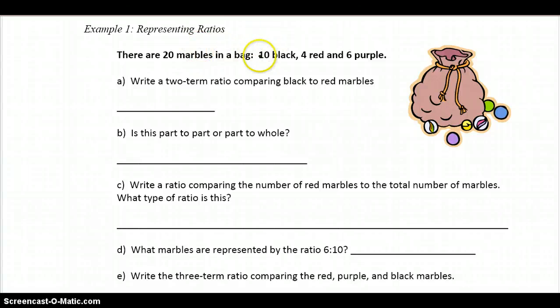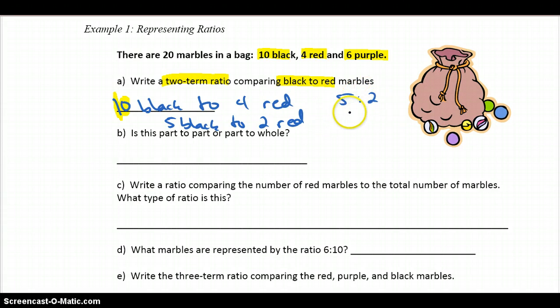So a couple examples we'll look at, and we'll get you going on some questions. Here there are 20 marbles in a bag. We've got 10 black marbles. We've got 4 red marbles. And we've got 6 purple marbles. So the first thing we want to do is write a two term ratio comparing black to red. And hopefully you can see it already. There's 10 black to 4 red marbles. And we could rewrite that in lowest terms.